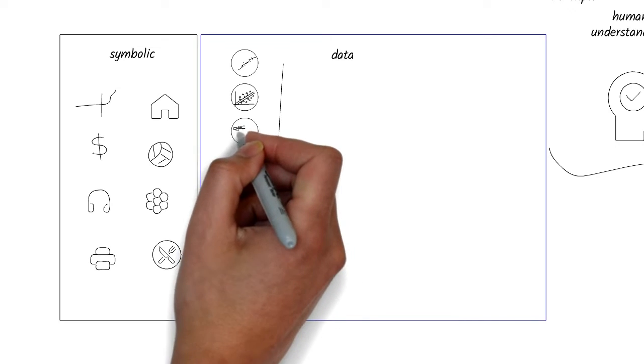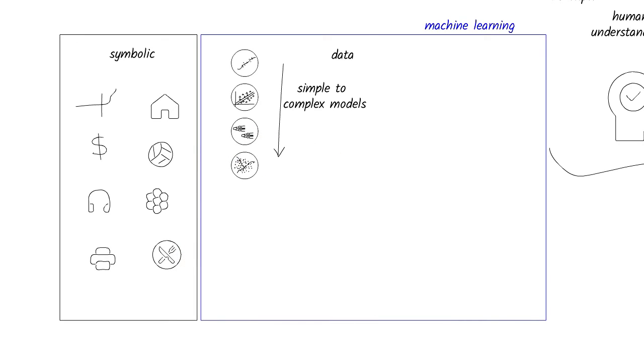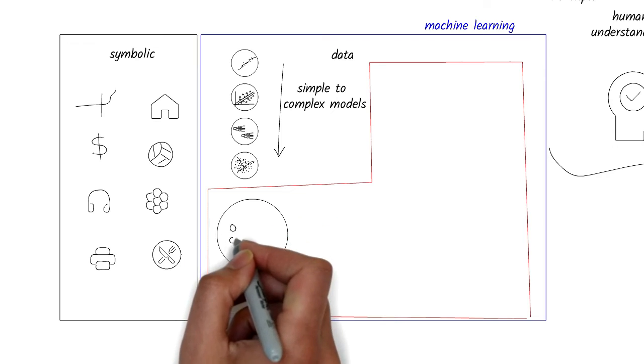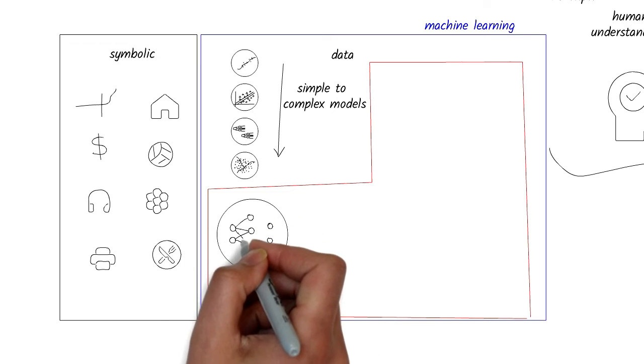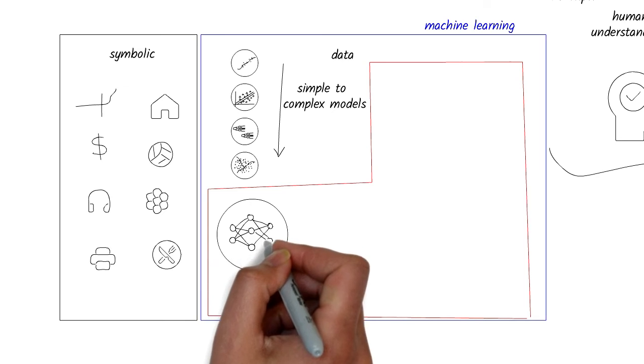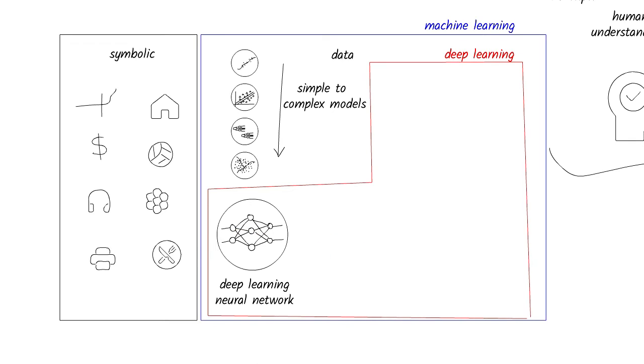Here, different models represent the data. Some models are simple, like equations or decision trees, and others are more complex. One particular set of models to represent complex knowledge are called deep neural networks because they have many layers. The way we train these networks is called deep learning. So deep learning is a subset of machine learning.